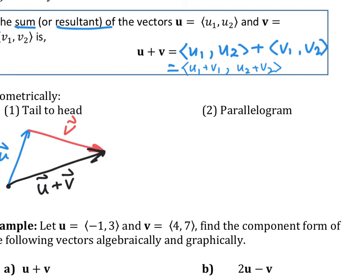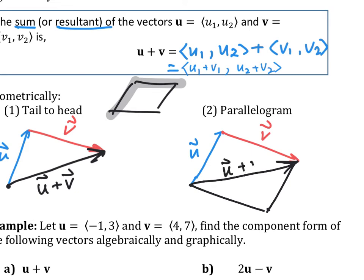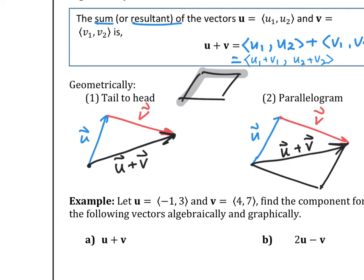The second method is the parallelogram method. Draw the same two vectors u and v. Think of them as two sides of a parallelogram, then draw the other two parallel sides to complete the parallelogram. The diagonal through the parallelogram connecting the two vectors is u + v. Both methods produce the exact same sum vector — they are just two different ways of visualizing it.